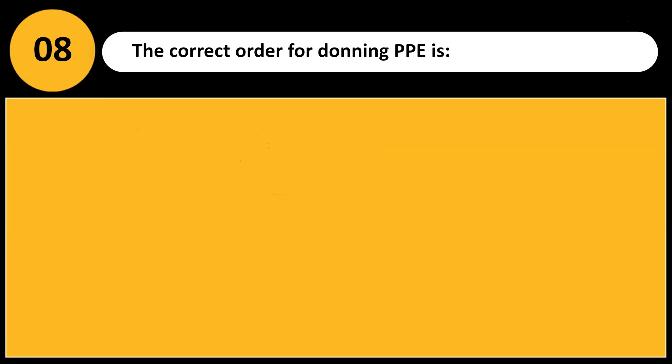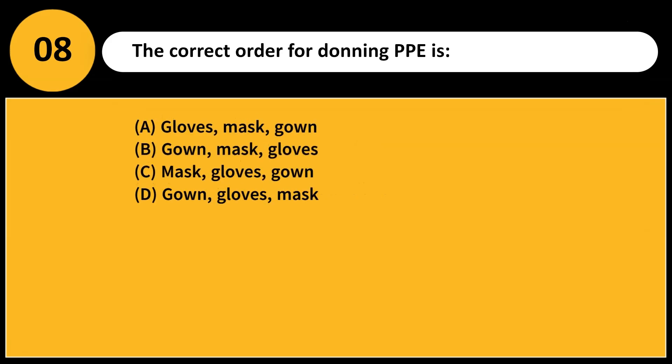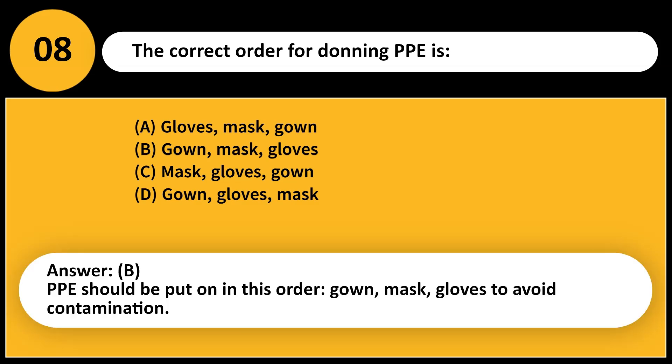The correct order for donning PPE is: A. Gloves, mask, gown. B. Gown, mask, gloves. C. Mask, gloves, gown. D. Gown, gloves, mask. Answer: B. PPE should be put on in this order — gown, mask, gloves — to avoid contamination.